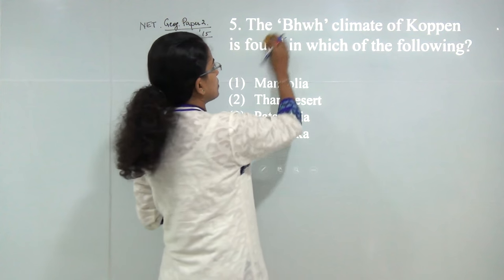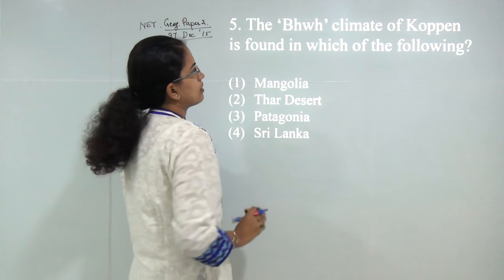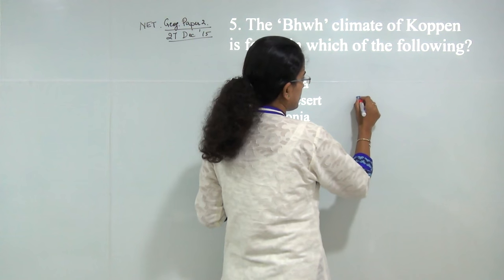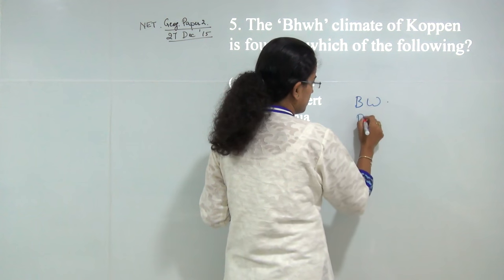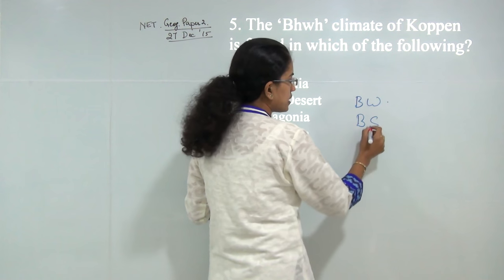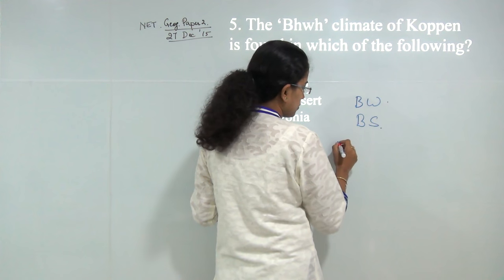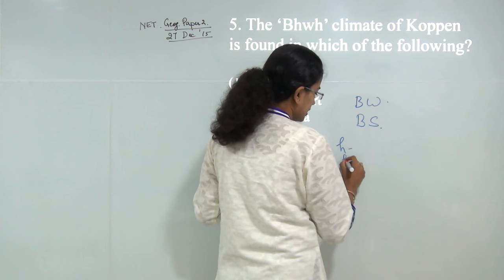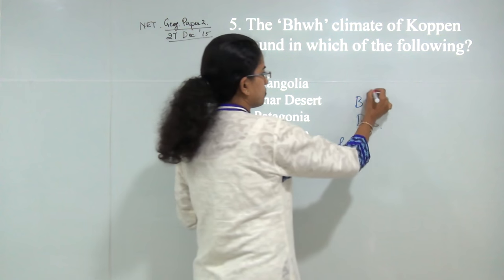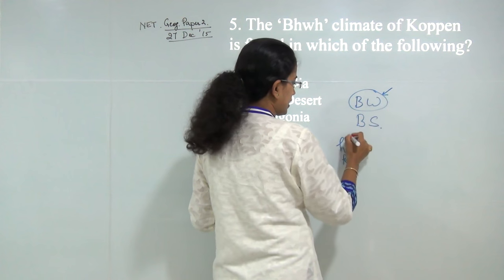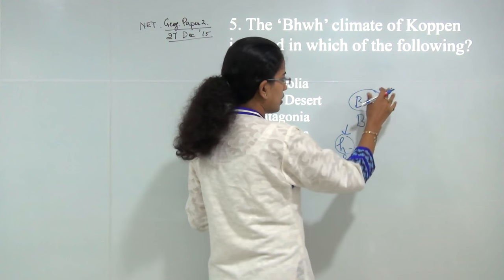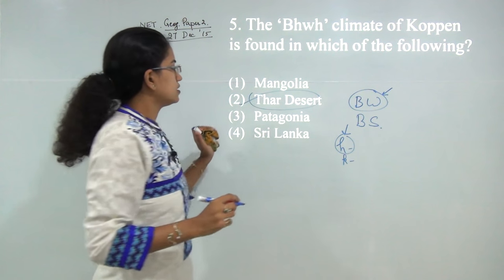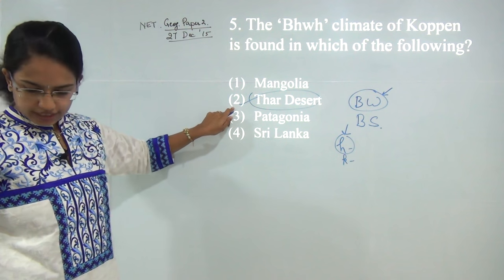Next: BHWH climate by Köppen was given for? BW is given for arid, BS for semi-arid areas, H for hot or warm areas, and K for cold areas. BW is a desert climate and H is hot, so you have a hot desert climate and the answer here would be Thar Desert, so 2 is the correct option.